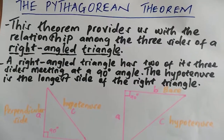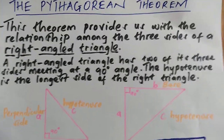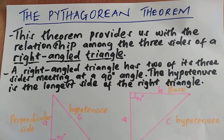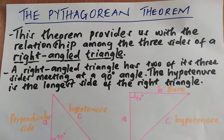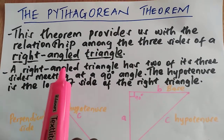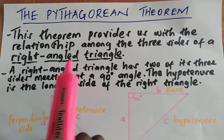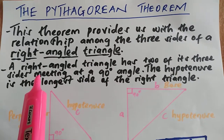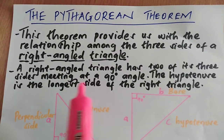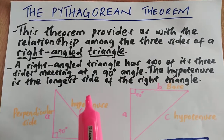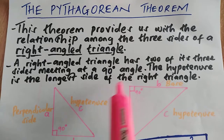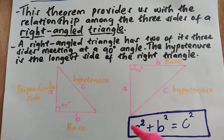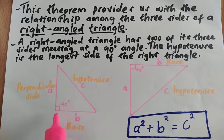Hello and welcome to my tutorial on the Pythagorean theorem. The Pythagorean theorem provides us with the relationship among the three sides of a right-angled triangle. A right-angled triangle, also known as a right triangle, is a triangle that has two of its three sides meeting at a 90 degrees angle, and the hypotenuse is the longest side of the right triangle.